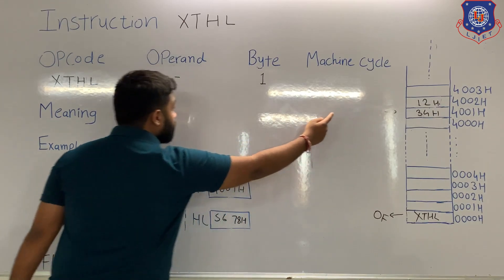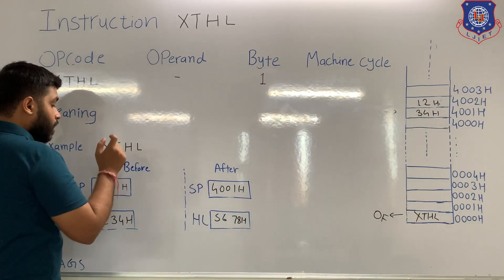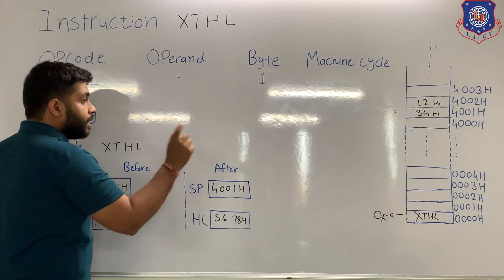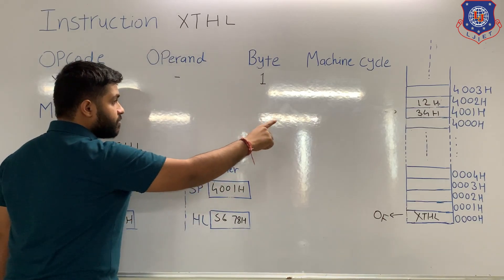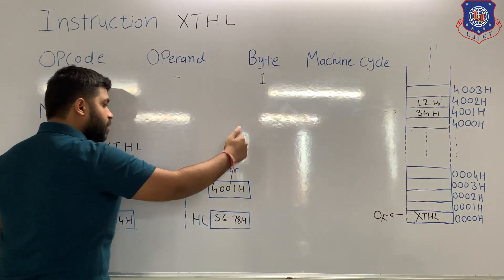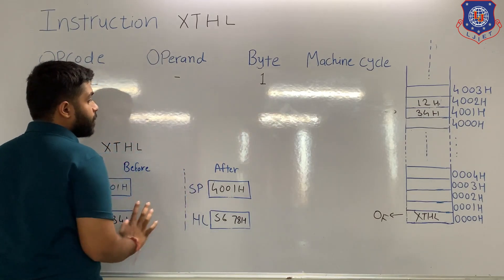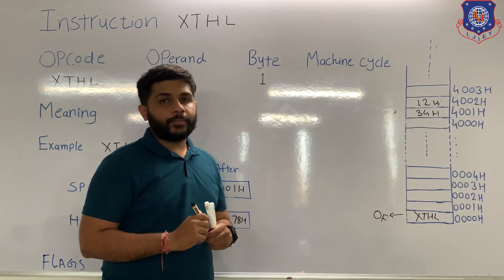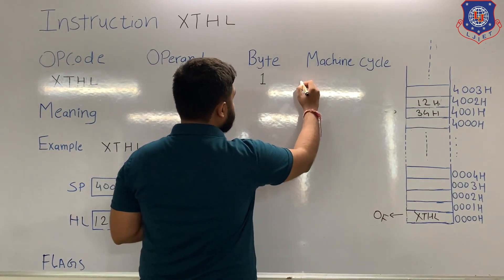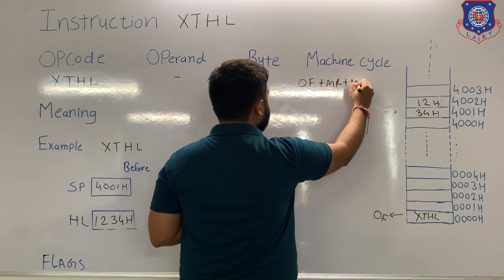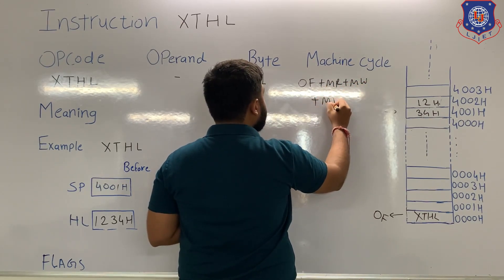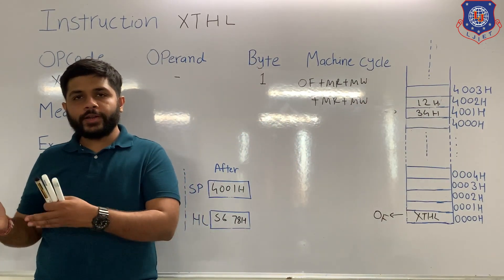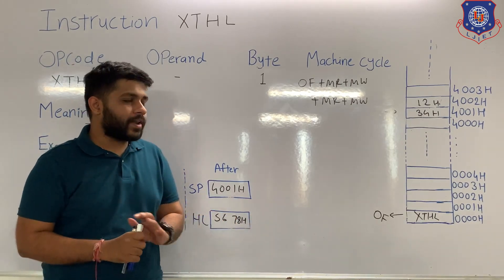During execution, the content of a memory location is transferred to the processor and the content of the processor is transferred to the memory location. First we read one memory location and then write to the same memory location; after that we read another memory location and write to that same memory location. So we are performing memory read and memory write two times. This is just like an ordinary data transfer instruction, so no flags are affected.